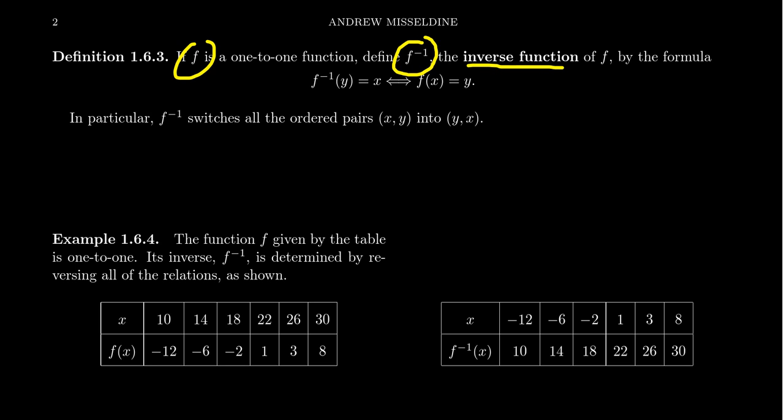Now, you have to be careful. In mathematics, we often use superscripts to talk about exponents. So when you see x squared, that means x times x. In this context, we're using a superscript of negative one, but this does not mean the negative one power. f to the negative one is not here going to mean one over f or anything like that. It's not an exponent. It is a superscript, though.